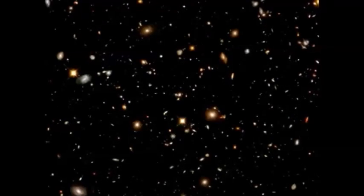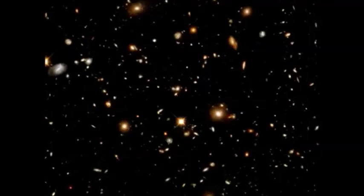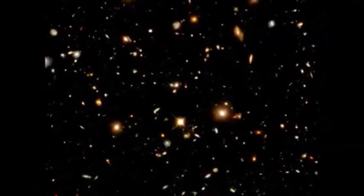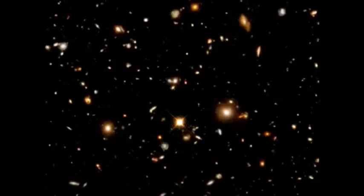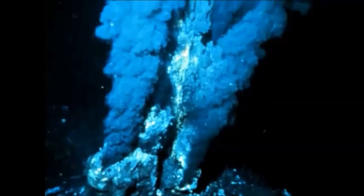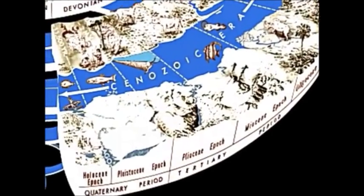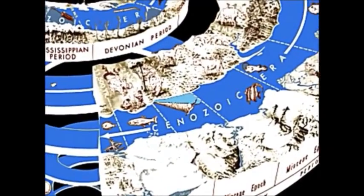There is a lot of misunderstanding about the theory of evolution, so let's emphasize what it is not. Evolution has nothing to do with where the universe came from — that's cosmology. Evolution is not a theory of how life on Earth began — that's abiogenesis. All it deals with is how living things change over time.